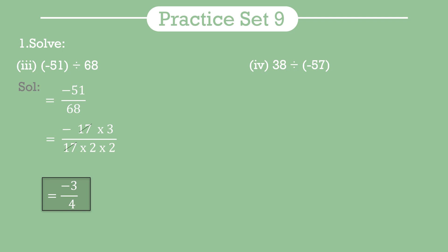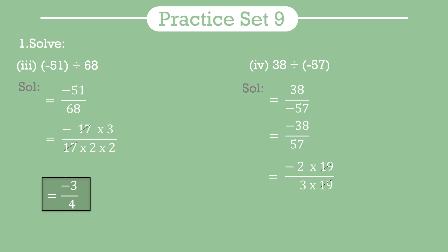Fourth example: 38 divided by minus 57. We write it as 38 upon minus 57. Since the negative sign is in the denominator, we shift it to the numerator: minus 38 upon 57. Factorizing: 38 = 2 × 19 and 57 = 3 × 19. We cancel 19. What remains is minus 2 upon 3, so the answer is minus 2 upon 3.